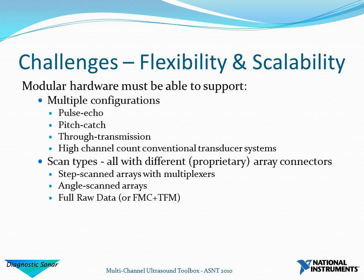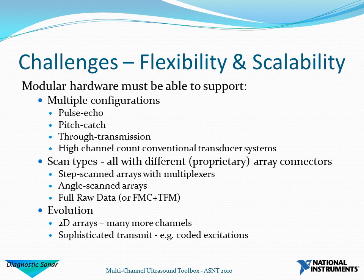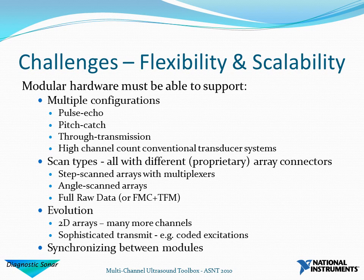We've already discussed step-scanned arrays with multiplexing. Without a multiplexer, you can use almost the whole aperture on transmit and receive for every beam, scanning through angles by providing a skewed delay profile. We also need to be capable of addressing full raw data systems. Looking to the future, there's going to be a migration towards two-dimensional arrays involving many more channels, even with sparse arrays. We also want to handle sophisticated transmits such as coded excitations, and where we need multiple modules, we need very tight synchronization between them.